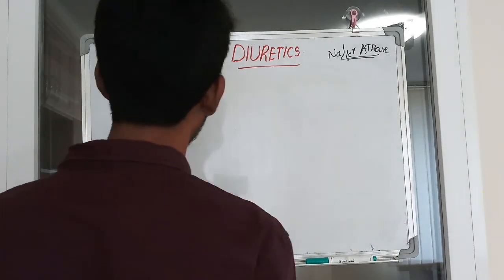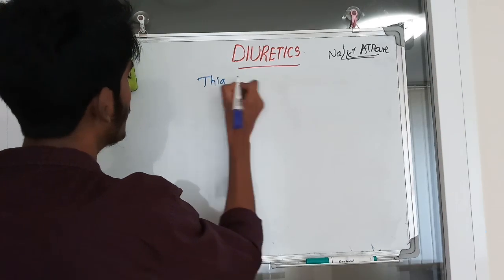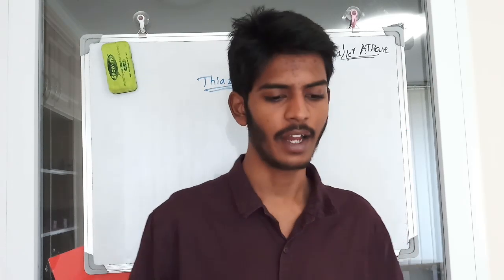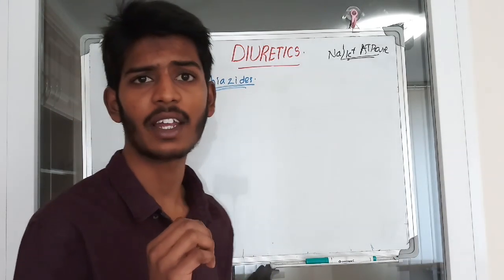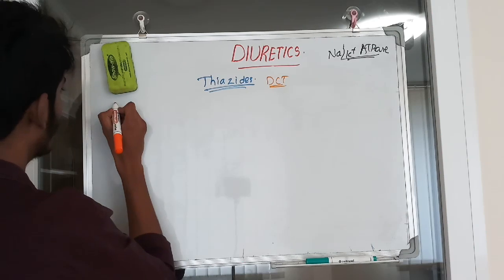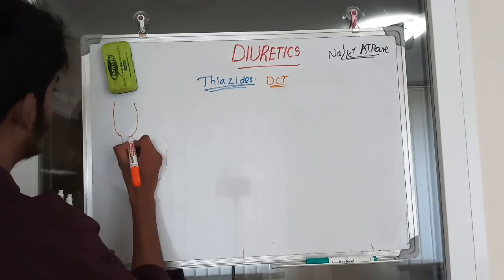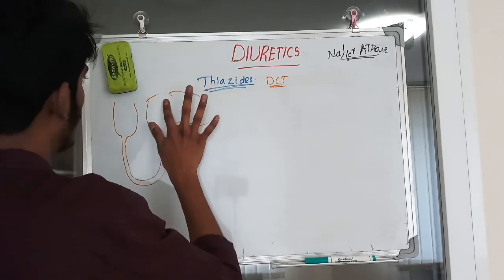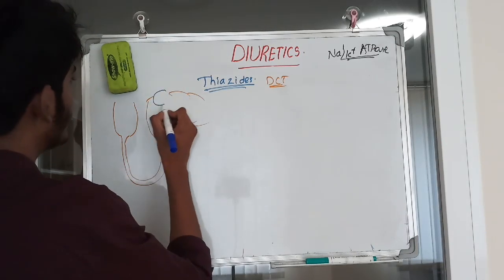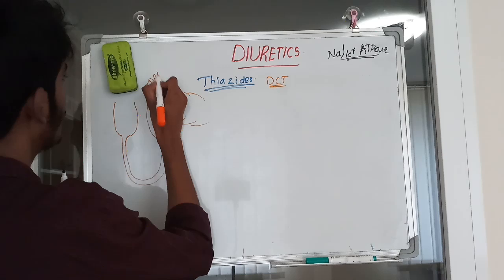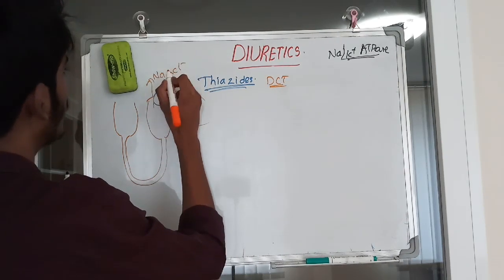Now we'll discuss thiazide diuretics. Thiazide diuretics include hydrochlorothiazide and chlorothiazide. Their location of action is the distal convoluted tubule. In the distal convoluted tubule there is a symporter — a transporter similar to that of loop diuretics — involved in the reabsorption of sodium and chloride.